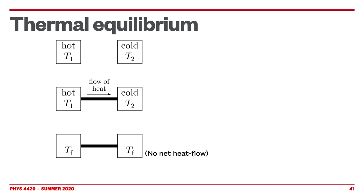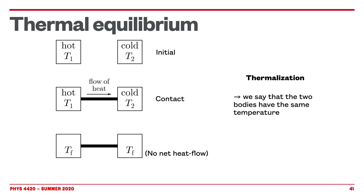Let's consider three systems here — three different snapshots. First, the initial snapshot: we have two systems that are isolated initially. One is hot, temperature T1, and one is cold, temperature T2, with T1 larger than T2. After a little bit, we turn on the contact between the two objects, symbolized by the black horizontal rod.